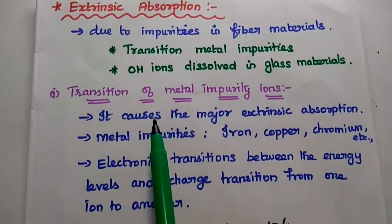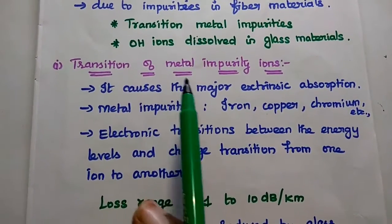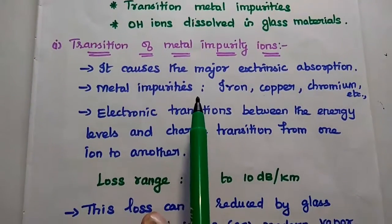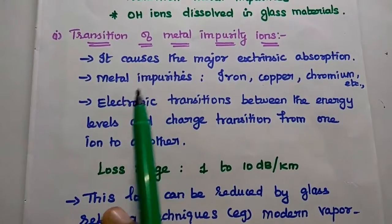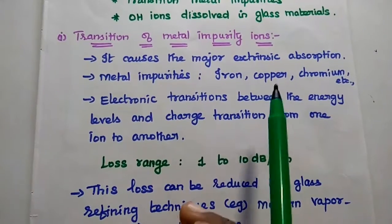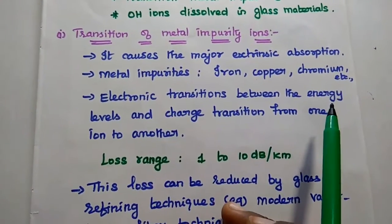The transition of metal impurity ions causes the major extrinsic absorption. The metal impurities are iron, copper, chromium, cobalt, etc.